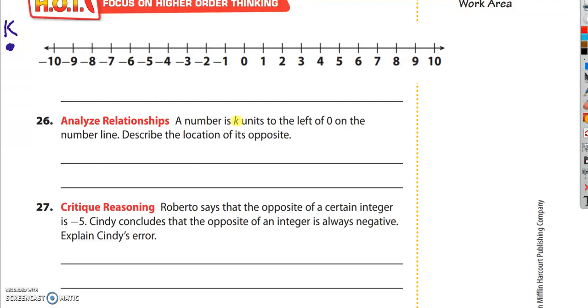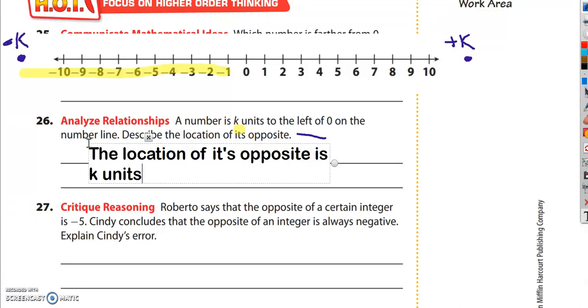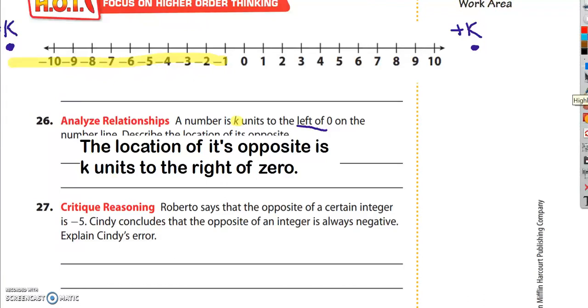But what do we know about it? Well, everything on this side over here is going to be negative. So where would its opposite be? Well, its opposite would be the same distance, but it would be on the positive side. It says, a number is k units to the left of 0 on the number line. Describe the location of its opposite. Well, this is going to be negative k, so this one has to be positive k. The location of its opposite is k units to the right of 0.